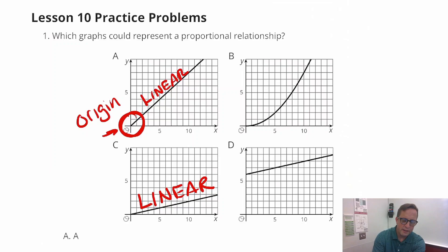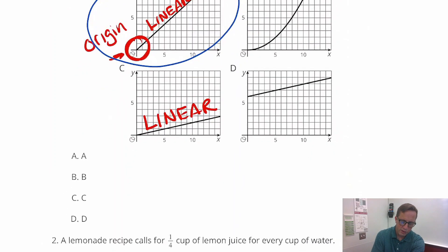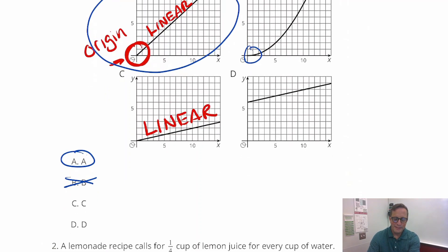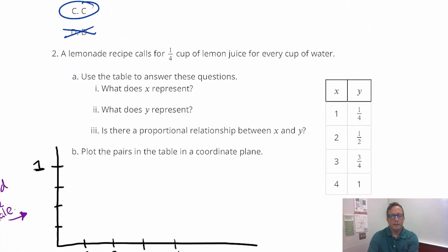Then it is, well I can just circle A down here. B certainly starts at the origin but it's not linear, so not B. C starts at the origin and it's linear, so C is good. D is linear but does not begin at the origin.